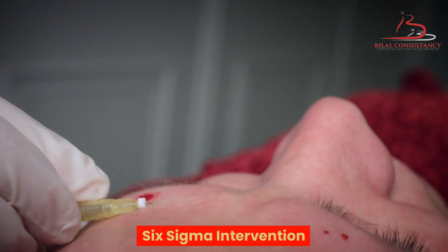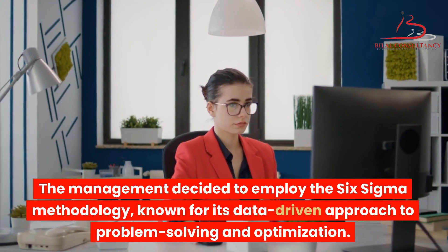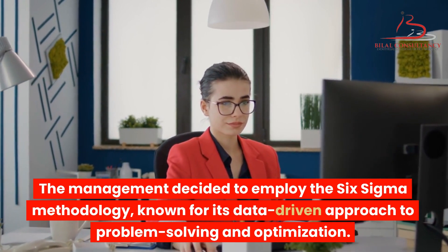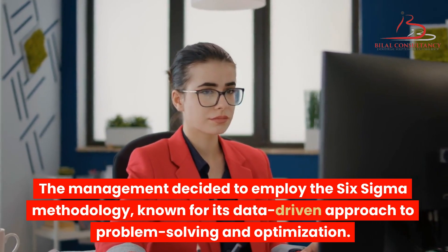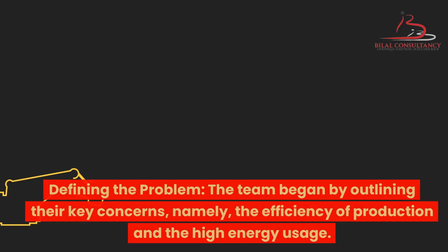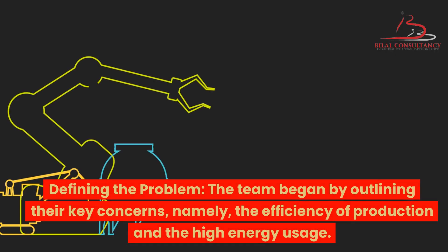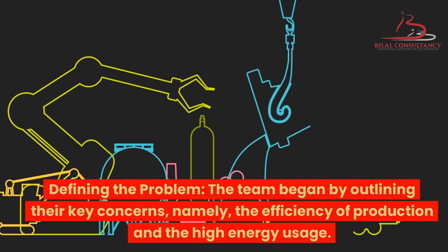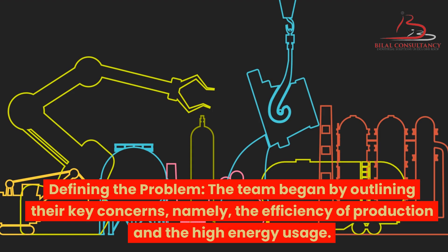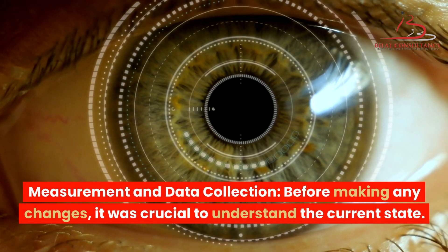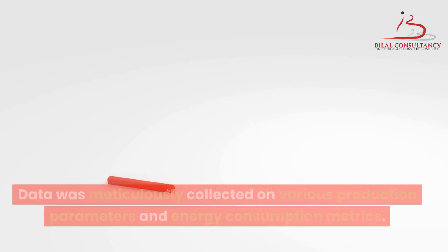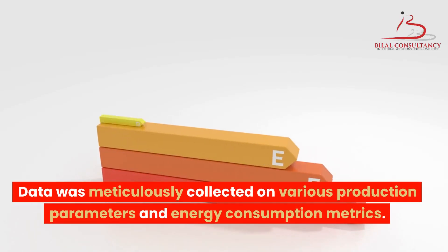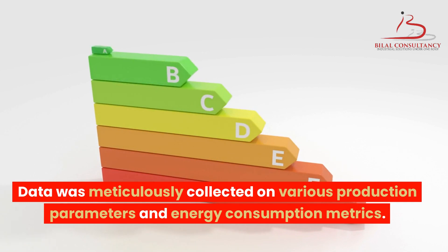Six Sigma Intervention. The management decided to employ the Six Sigma methodology, known for its data-driven approach to problem solving and optimization. Their intervention included defining the problem: the team outlined their key concerns — production efficiency and high energy usage. This was followed by measurement and data collection: before making any changes, data was meticulously collected on various production parameters and energy consumption metrics to understand the current state.